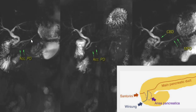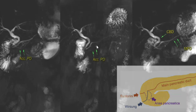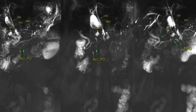Here is another example of ANSA pancreatica. An accessory pancreatic duct is seen arising from the main pancreatic duct. It is seen to descend down, then ascend upwards, forming a loop, crossing the CBD and finally terminating into the minor papilla. Findings consistent with ANSA pancreatic duct.